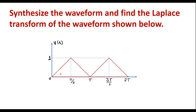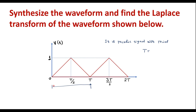We can observe that V of t is a periodic triangular signal. It is periodic with period T, which means that at every T the same triangular waveform will repeat. The period of this signal is T itself.